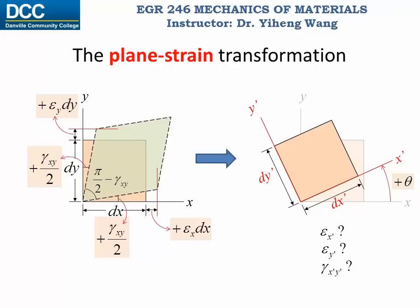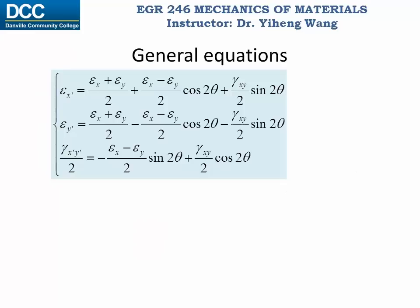According to sign convention, this element has rotated a positive angle theta if it rotates counterclockwise. We wish to calculate the new normal strain epsilon x prime, new normal strain epsilon y prime, and the new shear strain gamma x prime y prime according to this new orientation. This essentially becomes a geometry problem, and depending on the angle of rotation theta, we can calculate the new plane strain components from the original plane strain components using these general equations. Also, epsilon x prime plus epsilon y prime always equals epsilon x plus epsilon y, the sum of the two original normal strain components.